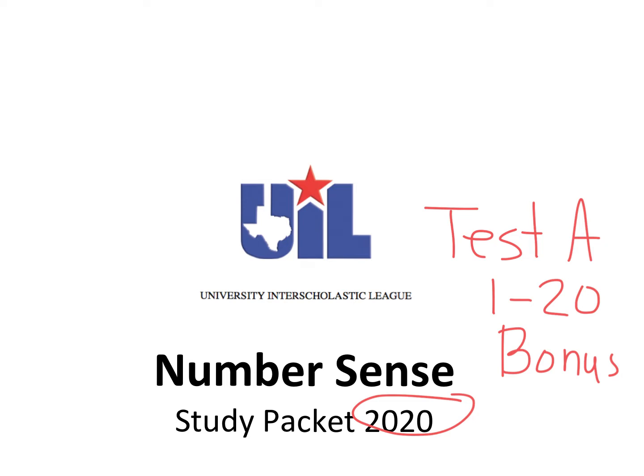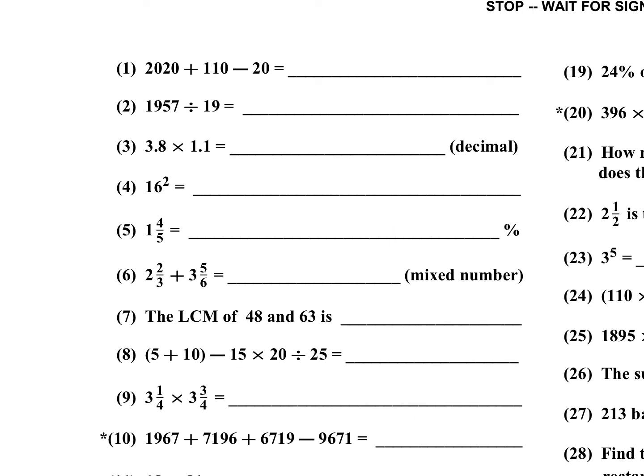Without further ado, let's move on to number one. Problem number one: 2020 plus 110 minus 20. I can cancel this 20 with that 20, so I have 2000 plus 110, that's 2110. Number two: 1957 divided by 19. 19 into 19 is 1, then 0, and 19 into 57 is 3, so that would be 103. Number 3: 3.8 times 1.1. Think of 38 times 11, so you're going to have 8 for your last digit, then 3 plus 8 is 11, carry of 1, 3 plus 1 is 4. Now remember you have to move back one here and one there, two decimal places, so it'd be 4.18.